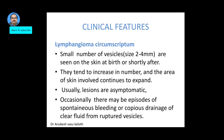Regarding the clinical presentation: lymphangioma circumscriptum presents as a small number of vesicles, size around less than 4 mm, seen on the skin at birth or shortly after. They increase in number with time and the area of skin involved also increases. They are usually asymptomatic, but there can be episodes of spontaneous bleeding or copious drainage of fluid from ruptured vesicles.